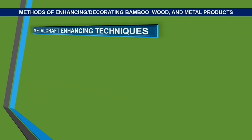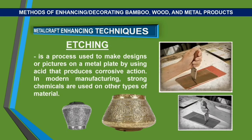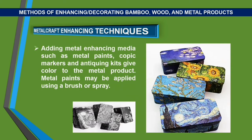Metal craft enhancing techniques. Engraving is a method of transferring a design on metal using a hardened steel tool called a burin or graver to cut into the surface of the metal. Etching is a process used to make designs or pictures on a metal plate by using acid that produces corrosive action; in modern manufacturing, strong chemicals are used on other types of material. Adding metal enhancing media such as metal paints, copic markers, and antiquing kits give color to the metal product; metal paints may be applied using a brush or spray.